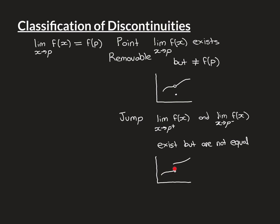Graphically, the left-hand limit of the function as you approach P from the left gives one value, while the right-hand limit as you approach P from the right gives a totally different value. They both exist, but they are different from one another. The actual value of the function at P doesn't change what the one-sided limits are.